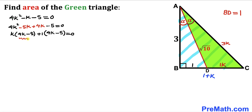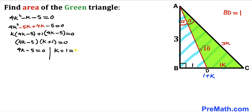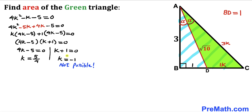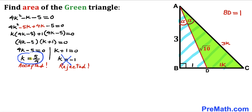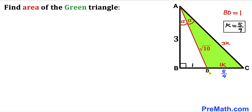Factoring out (4K − 5) gives (4K − 5)(K + 1) = 0. Setting each factor to zero: 4K − 5 = 0 → K = 5/4, and K + 1 = 0 → K = −1. Since K represents a side length, K = −1 is not feasible, so we accept K = 5/4.